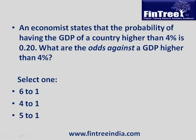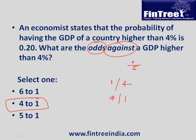An economist states that the probability of having GDP of a country higher than 4% is 0.2. What are the odds against a GDP higher than 4%? The probability of 20% can be written as 1 divided by 5. That means if there are 5 events, once you would be successful — so odds in favour are 1 to 4, and odds against are 4 to 1.